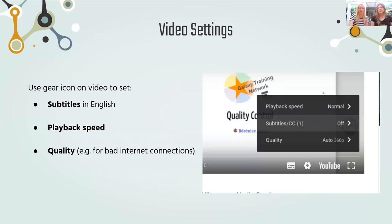Some important video settings — most people have used YouTube, but if you haven't: all videos have subtitles, which you'll find in the gear menu at the bottom right. You can enable subtitles, change the playback speed if some of us are talking too fast, or decrease or increase the quality depending on your internet connection.